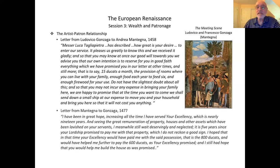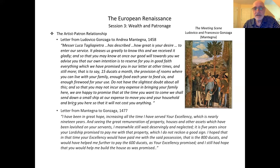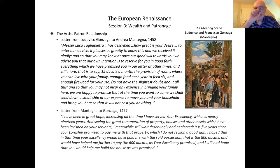Because we've been looking at the Gonzagas fairly closely, I want to look at an exchange of letters between Mantegna and Lodovico Gonzaga. Mantegna was known to be something of a complainer, and a lot of his letters have a harsh tone. Gonzaga, on the other hand, seems to be this kind of elegant man of peace. Letter from Lodovico Gonzaga to Andrea Mantegna, 1458: 'Mr. Luca Talia Pietra has described how great is your desire to enter our service. It pleases us greatly, and we received it gladly. Our intention is to reserve for you in good faith everything we have promised: 15 ducats a month, a provision of rooms where you can live with your family, enough food each year to feed six, and enough firewood for your use. Do not have the slightest doubt about all this.'